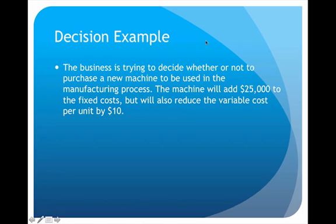For example, a business is trying to decide whether to purchase a new machine for their manufacturing process. The machine would add $25,000 to fixed costs but would reduce the variable cost per unit by $10. This is a tough decision — it increases fixed costs but lowers variable costs, so we want to calculate a revised break-even to see what the best course of action would be.